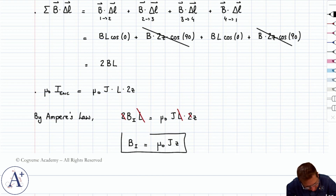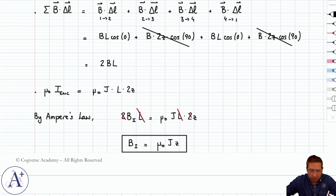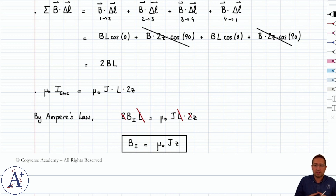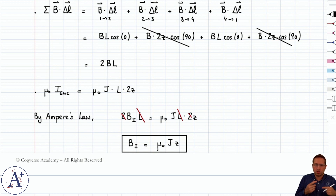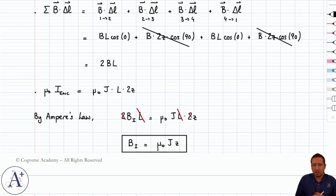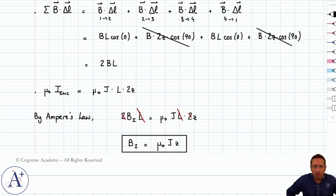So B₁ equals μ₀Jz in magnitude. We'll include direction a bit later when we graph the magnetic field. The direction changes depending on whether you're above or below the center of the slab. The key result is that the magnitude of the magnetic field is directly proportional to the height z above the center line. That completes region 1.